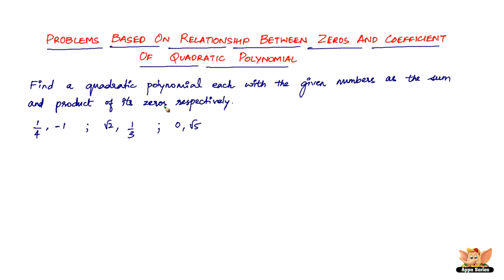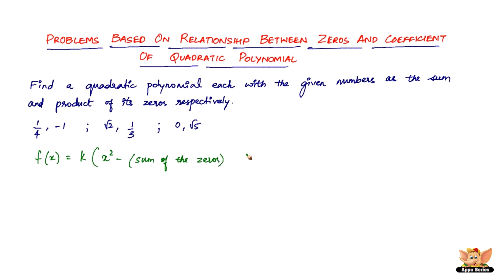Let's start off with the first set: one-by-four comma minus one. All we have to do is use the expression: f(x) equals k times x squared, minus the sum of the zeros times x, plus the product of the zeros.